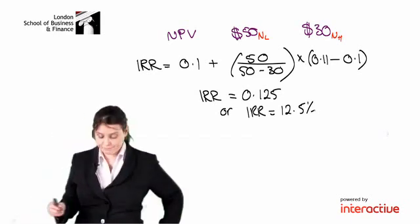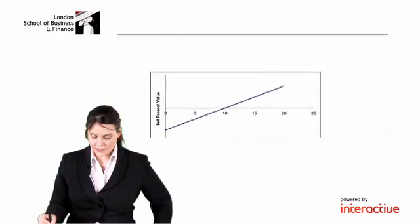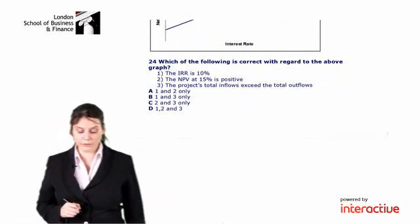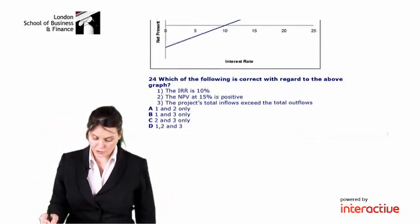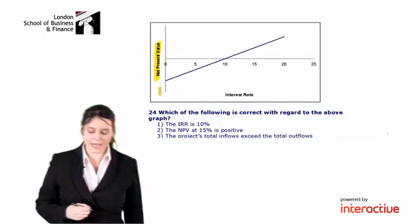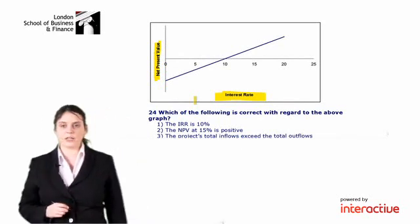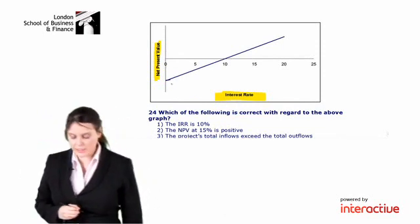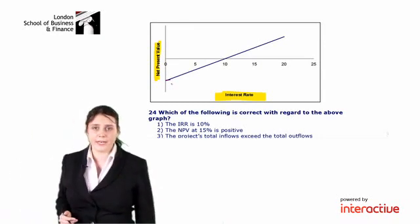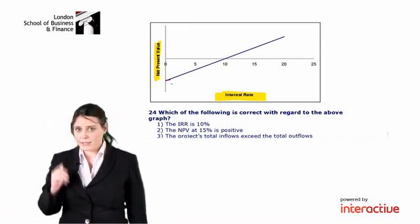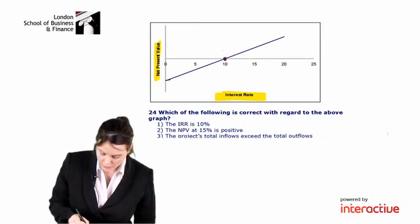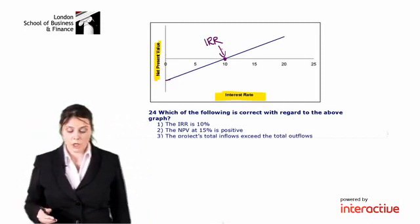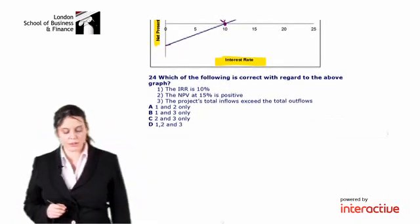Shall we have a look at our next question? We are showing a graph, and we are asked which of the following is correct with regard to the above graph? The graph gives us the net present value on the y-axis, and the interest rate on the x-axis. For a particular project or investment opportunity, the line is telling us what the NPV is at various different interest rates. Now what is really being examined here? What the examiner is testing is, do you know that the IRR is the interest rate when the NPV is 0?